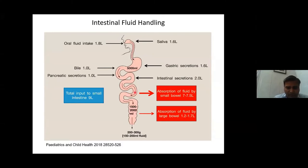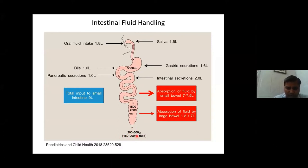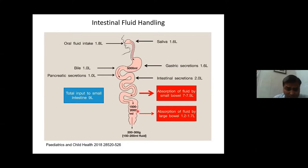Of those 9 liters, 7 to 7.5 liters get absorbed in the small intestine, and 1.5 to 2 liters go to the large bowel — the colon and rectum — where most are absorbed. Ultimately only 150 to 200 ml of fluid is passed in the feces. Even 100 ml of extra fluid may lead to diarrhea, while less than 100 ml may lead to constipation. Absorption and secretion are moderated by villus and crypt cells, along with various neurotransmitters and hormones.